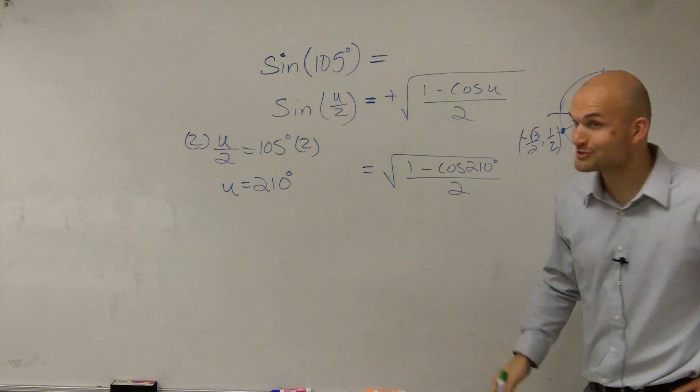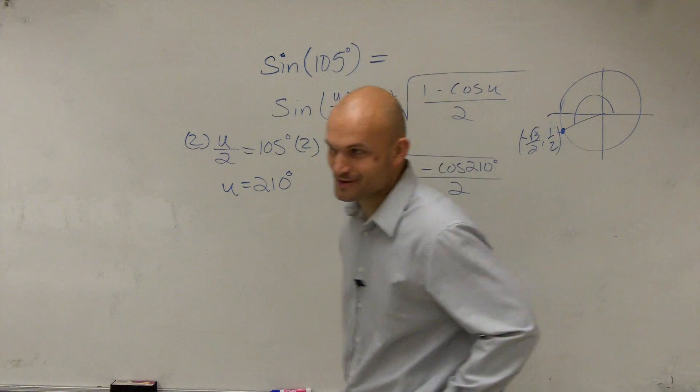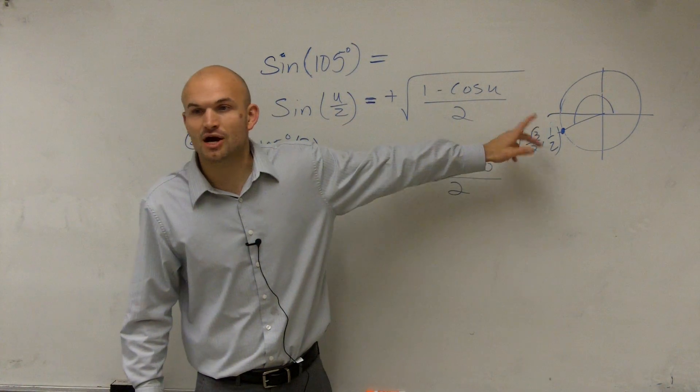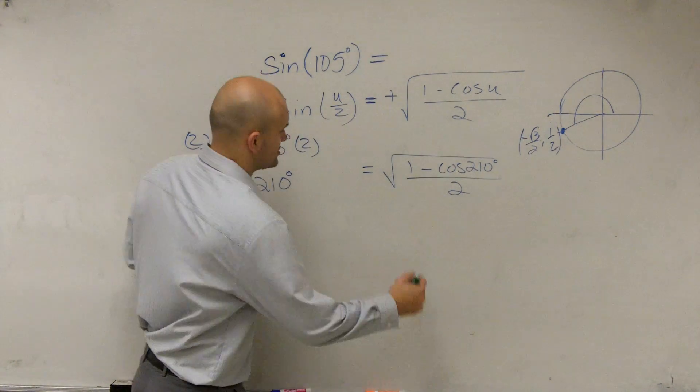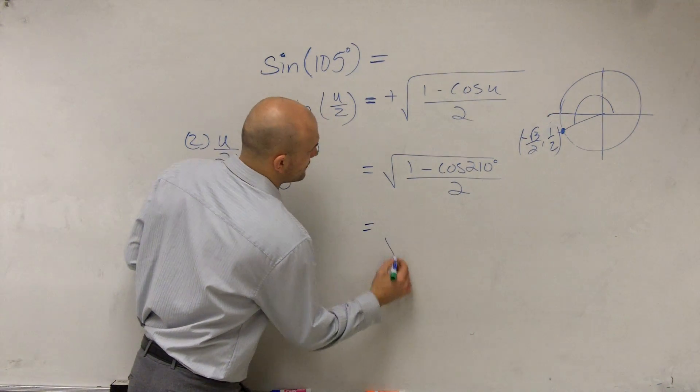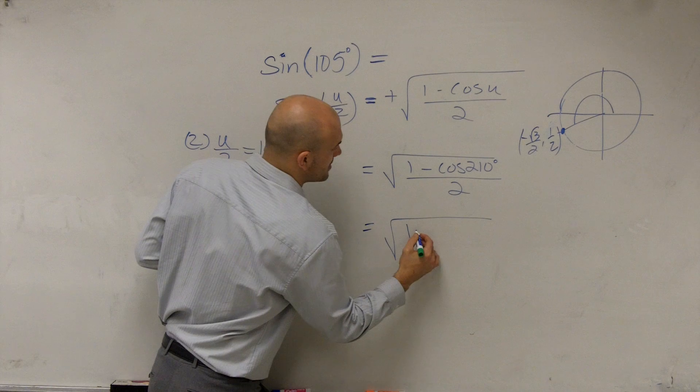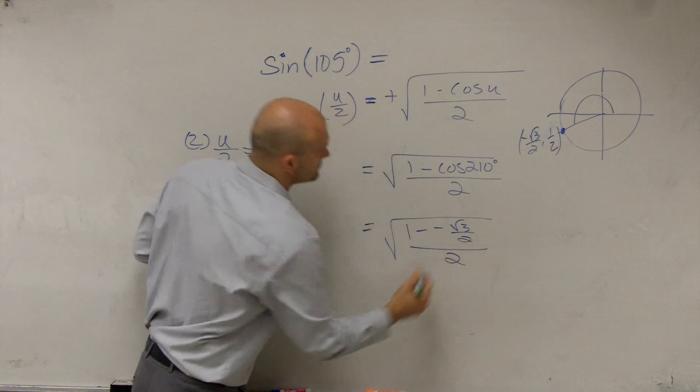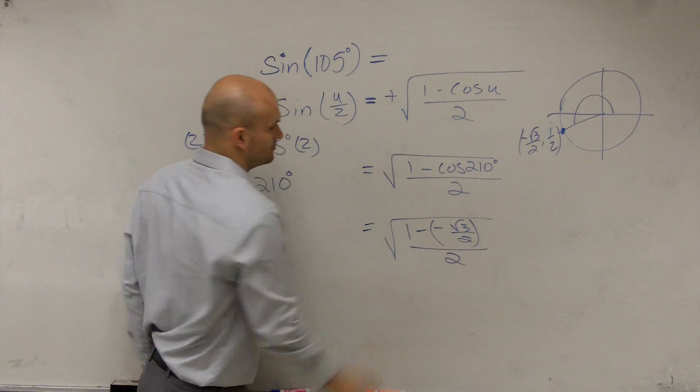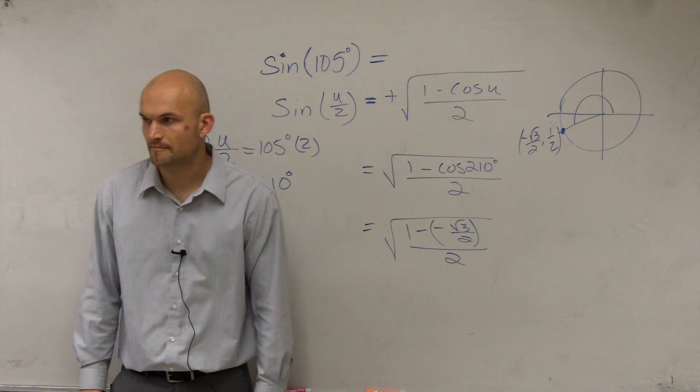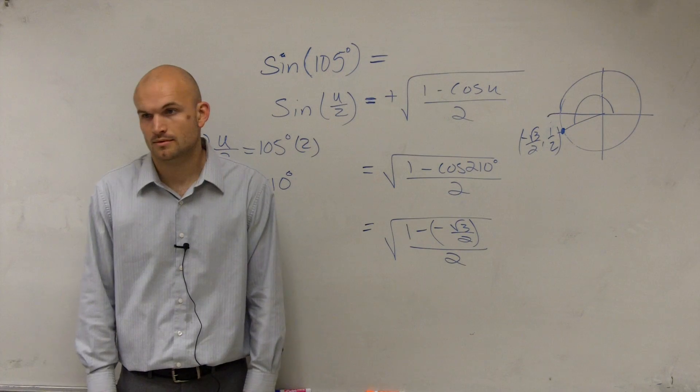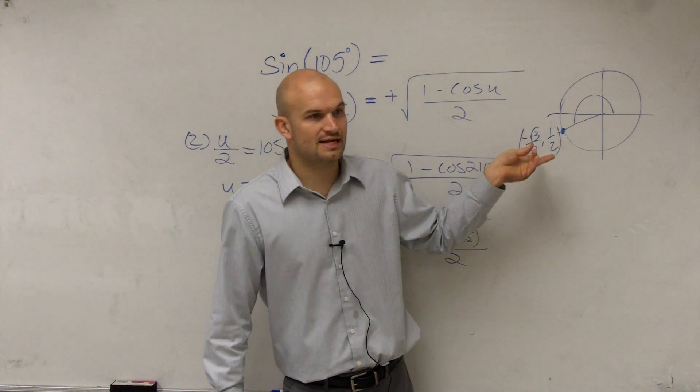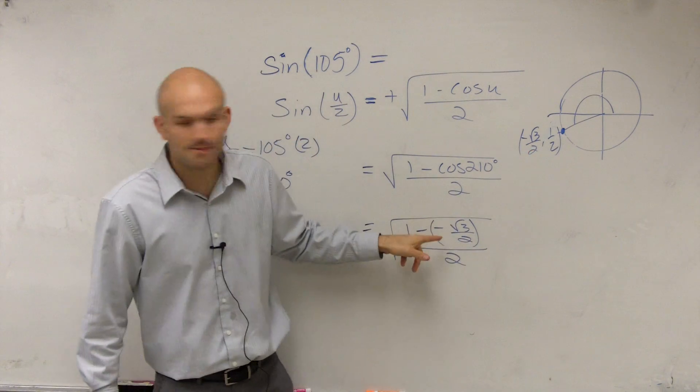Because we know our unit circle so very, very, very, very well by this point. Therefore, the cosine represents our x-coordinate. By plugging this in, I now have the square root of 1 minus a negative square root of 3 over 2 divided by 2. All I do is I evaluate it for cosine of 210 degrees, which is a negative square root of 3 over 2, and then I plug it in.